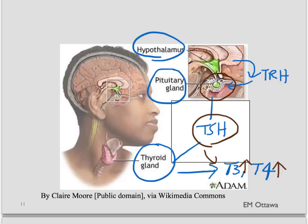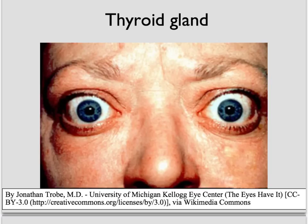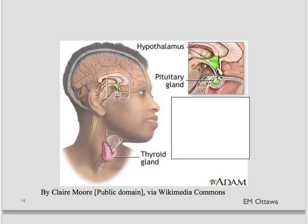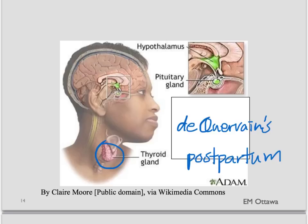Most hyperthyroidism problems, however, lie in the thyroid gland itself. First, Graves' disease — an autoimmune disease of the thyroid causing more thyroid hormone to be released. Patients might have exophthalmos, in addition to the other hyperthyroid symptoms discussed. Another problem could be a multinodular goiter, as evident here. Hyperthyroid state can also be caused by thyroiditis, such as de Quervain's thyroiditis or postpartum thyroiditis. These all cause an existing hyperthyroid state.